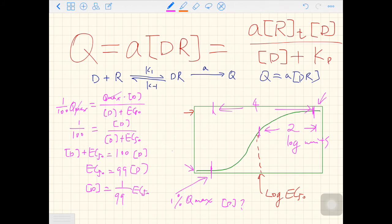On the top of this curve we have 99% Q max. So what will happen if we do the similar calculation? 99% of Q max equals Q max times D over D plus EC50. Q max cancels out and we do the cross multiplication. 99D plus 99 EC50 equals 100D. So we have D equals 99 EC50.